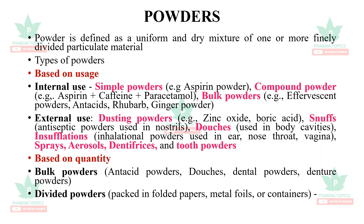External use powders, also called dusting powders, include zinc oxide and boric acid. Snuffs are antiseptic powders used in nostrils. Douches are used in body cavities such as the vagina. Insufflations are inhalation powders used in the ear, nose, throat, and vagina. Sprays, aerosols, dentifrices, and tooth powders are also external use powders.